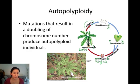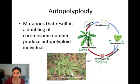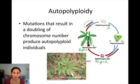This happens all the time in ferns. This is an example of autopolyploidy. If evolutionary forces — natural selection or genetic drift — impact these new polyploid individuals, they will develop into a new species.